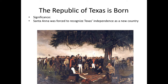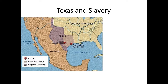Texas was its own independent country for about nine years — the only country ever to become a state of the United States. Mexico never fully recognized Texas's independence. There was also a disputed territory claimed by both Texas and Mexico, which would be a source of the later Mexican-American War. When the United States eventually annexed Texas, Mexico was furious, and the disputed territory made things even worse.